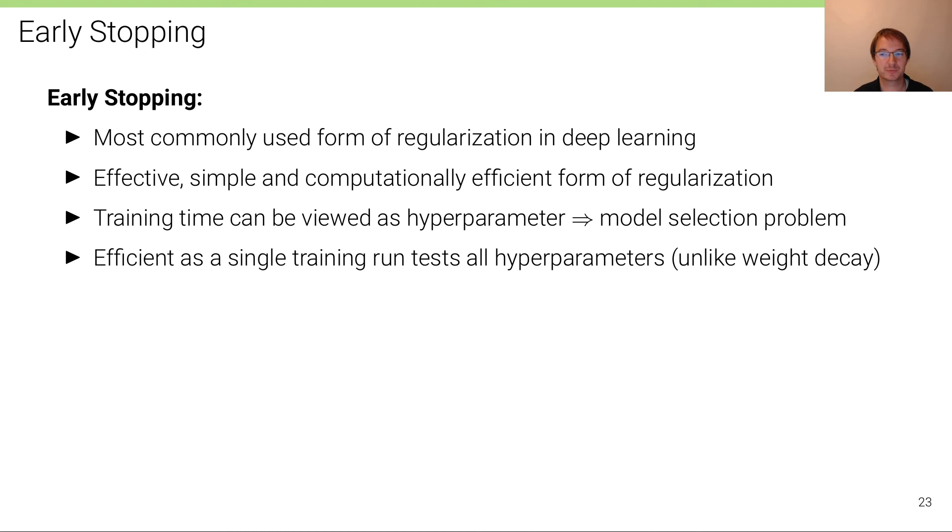So we have a model selection problem over this hyperparameter. But what's quite unique about the early stopping approach is that it's super efficient as it requires only a single training run to test all hyperparameters. Because at every iteration, whenever we benchmark, whenever we evaluate on the validation set, we obtain the validation error. We just need a single training run. This is unlike all the other hyperparameters. For instance, in weight decay where we have this alpha, in order to cross-validate, we need to train the model.